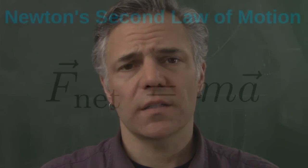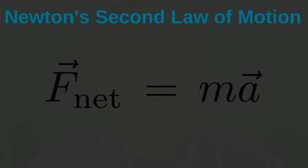You've likely seen this before if you've taken a physics class. The equation has on the left-hand side F-net: F is forces and net means total, so we're looking at the total forces acting on an object. The arrow on top of F means force is a vector quantity — we need to account not just for how strong a push or pull is, but its direction. Vectors are a mathematical way of doing that.